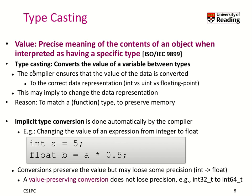You can cast, which means converting values between variables of different types. For instance, here we create a floating point variable 'b' and multiply our integer variable 'a' by 0.5 — which is itself a floating point number. Multiplying a whole number with a floating point number triggers an implicit type conversion: the compiler understands it has to convert the integer to a floating point number and produce a floating point result. This is automatically done by the compiler and typically preserves the value, so 5 times 0.5 gives 2.5. But you may lose a little precision going from integer to floating point, particularly for 64-bit integers.